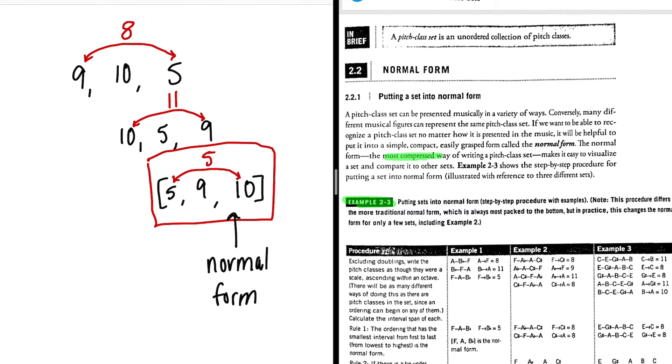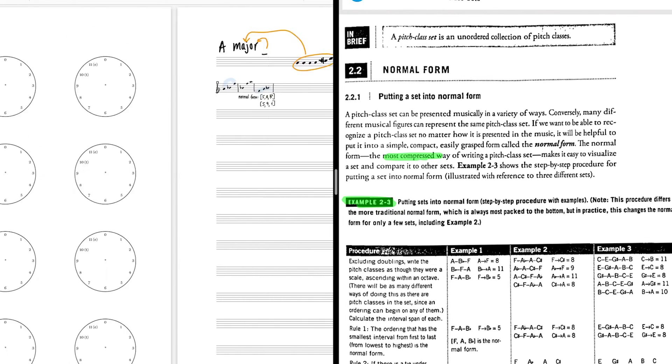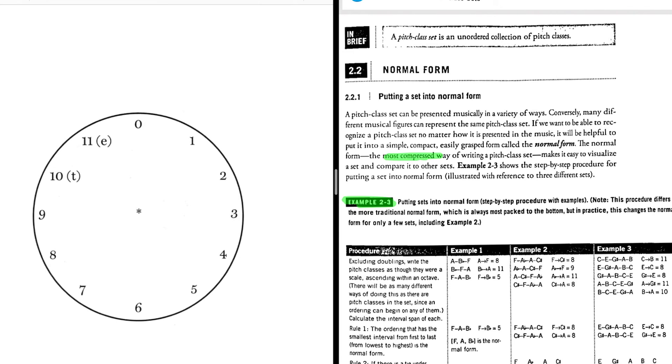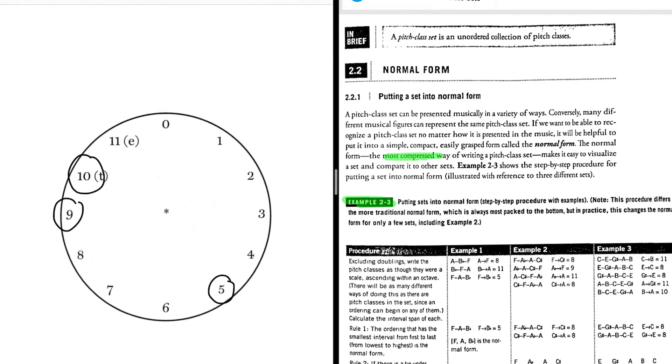All right, so if you don't like to do arithmetic mod 12, the other way I'm going to suggest that you look at it is, of course, to use the clock face. On the clock face, you simply circle the pitch class numbers you're dealing with. Five, nine, ten. And then it'll probably be very visually obvious which ordering will be the most compact ordering. The most compact ordering uses this portion of the circle. The reason I can tell is because it's excluding the largest interval between the members of the set. So this interval here is an interval of four, this interval is one, and this interval is seven.